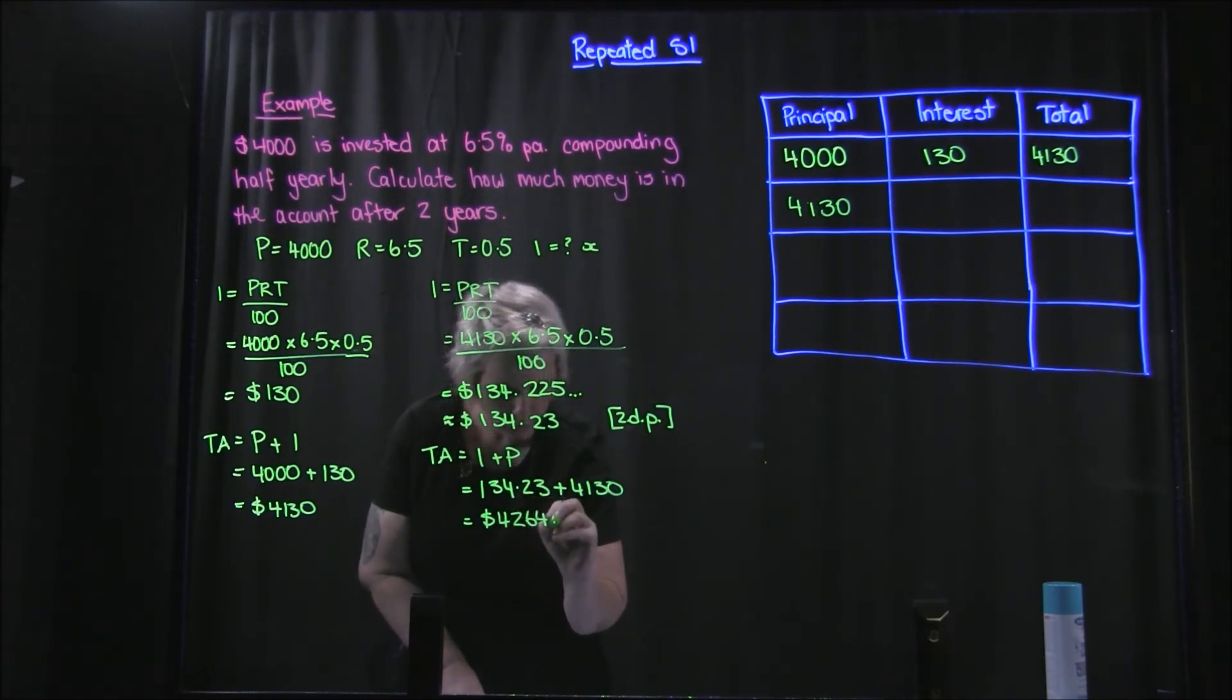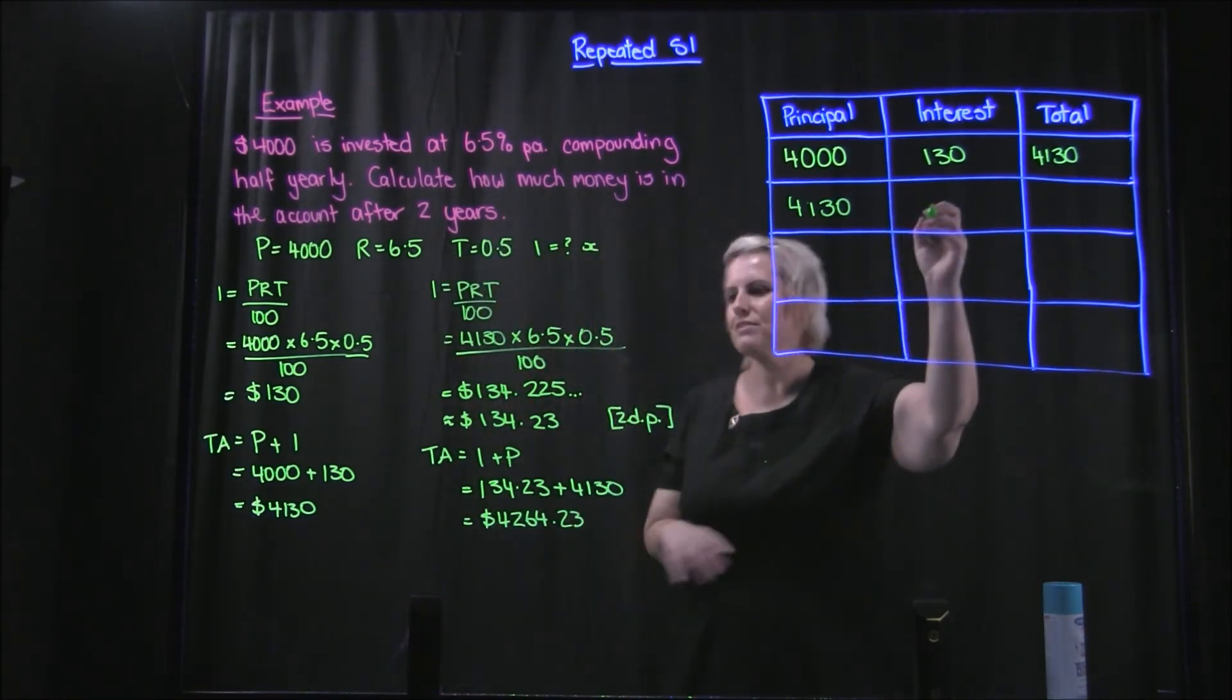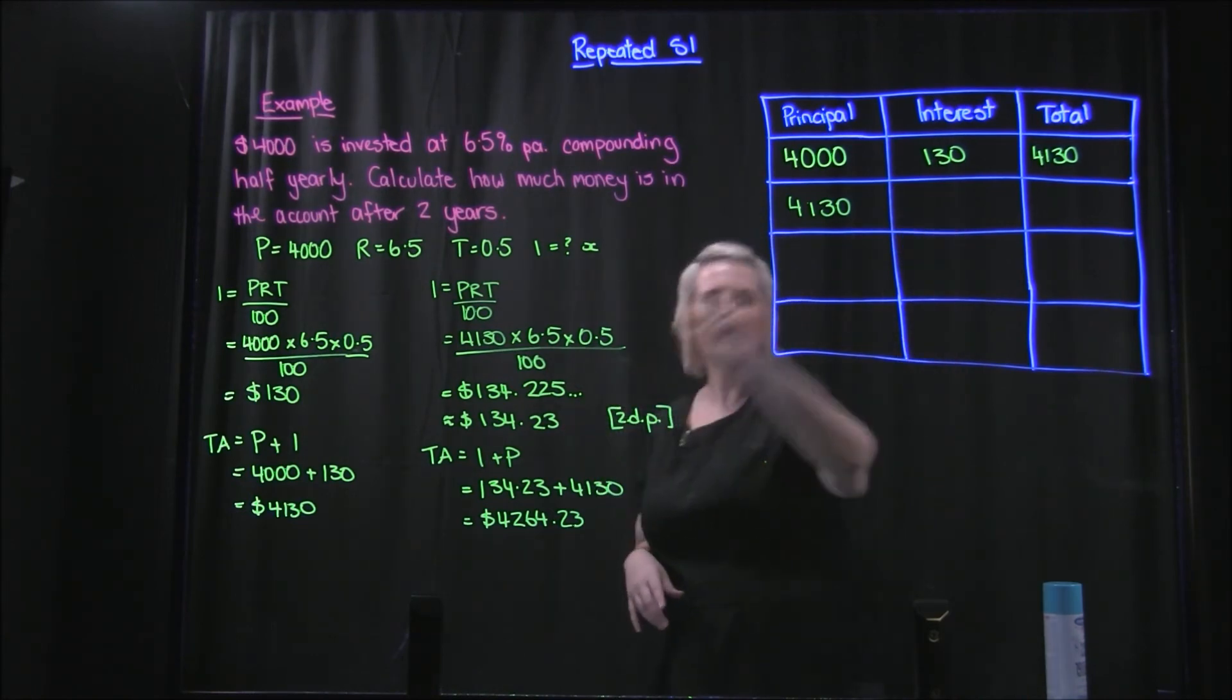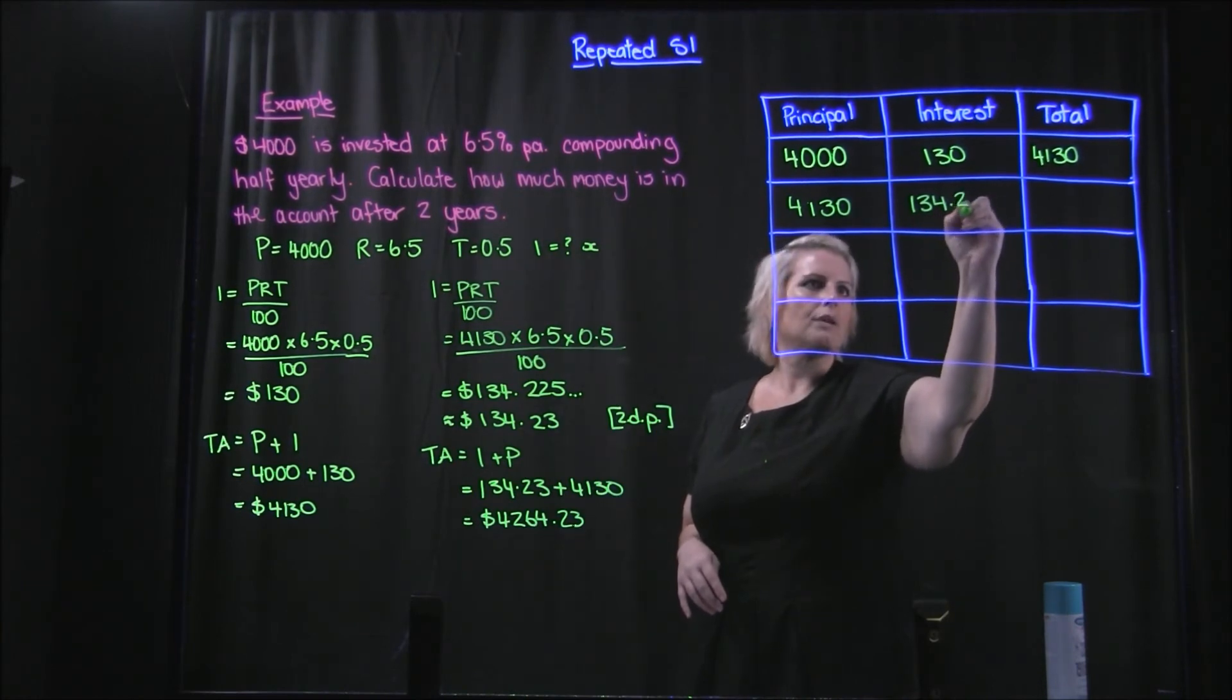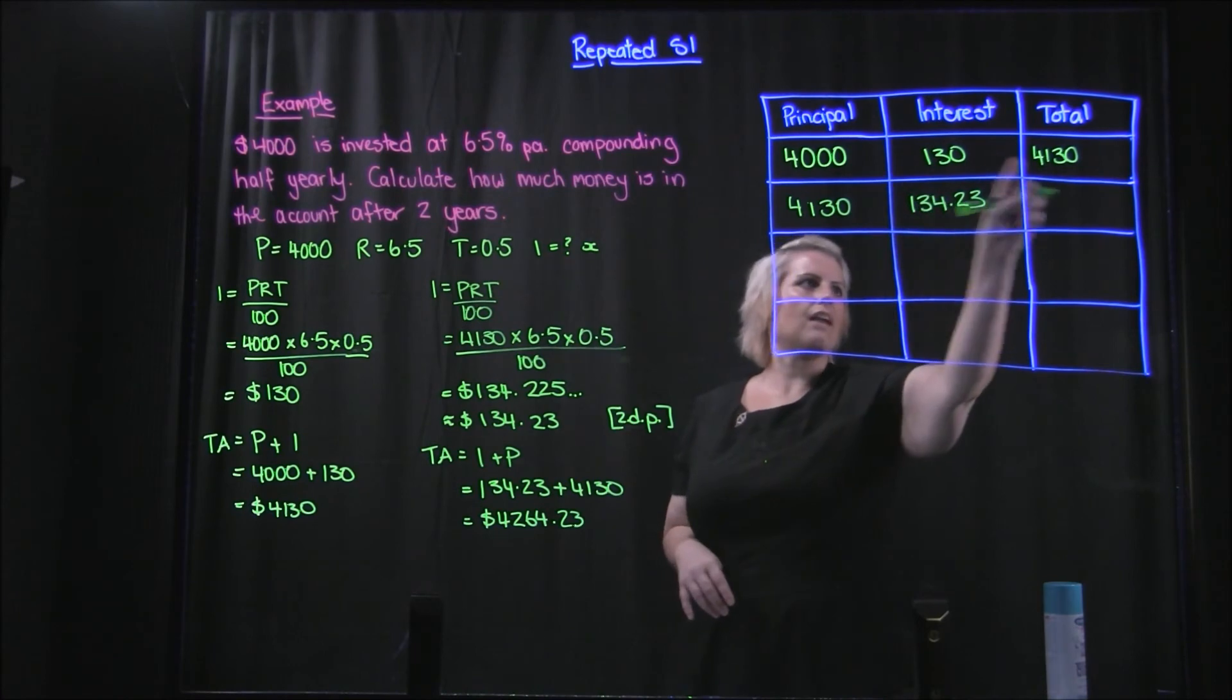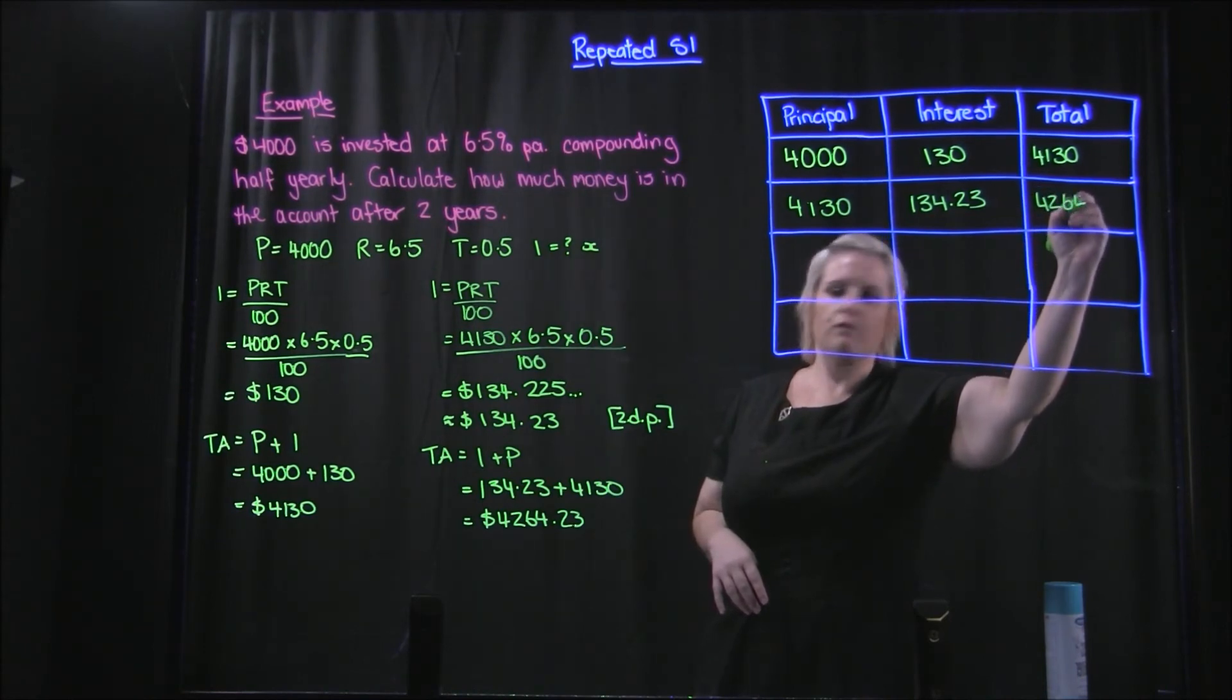$4264.23. So I've obviously worked these out before. You'll be just using your calculator. So the interest on this one was $134.23, so you can see that it's a little more because we actually had that $130 added on, so it's a little more than the one before. And then we end up with $4264.23.